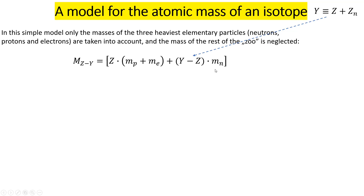Then I add the mass of a neutron multiplied by its number, where the number of neutrons equals the mass number minus the atomic number. That is the whole first-order model.